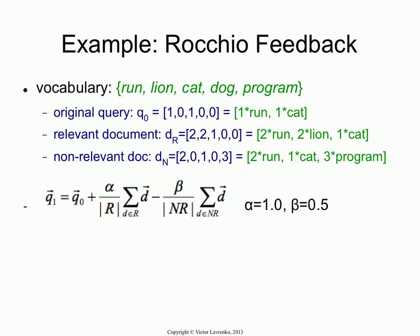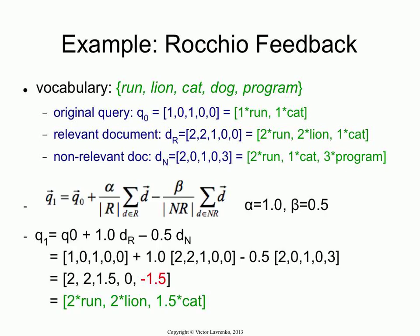So you just plug them into the formula — I'm not going to go through that, this is just for your benefit. But the only thing to pay attention to here is when you do this, you kind of want to keep everything in the positive octant. So if you have a term like 'program' which ends up with a negative weight as a result of Rocchio, you truncate it back to zero. You don't have negative weights in IR. It may seem a bit counterintuitive, but it actually works better this way.